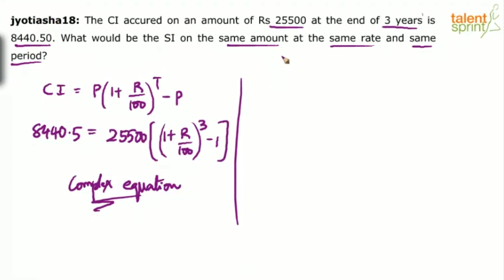How much compound interest have we earned in terms of percentage? Percentage of compound interest. How do you do this? 8,440.5 is what you have earned on a principal of 25,500 into 100. Do this calculation, and when you simplify, you'll find that this is 33.1 percentage, approximately 33.1 percentage.